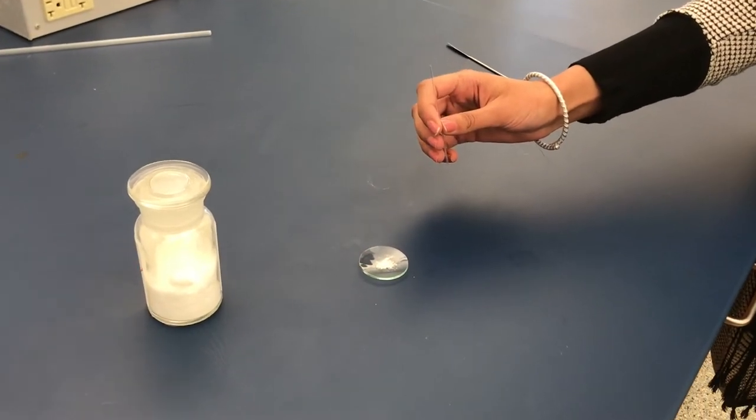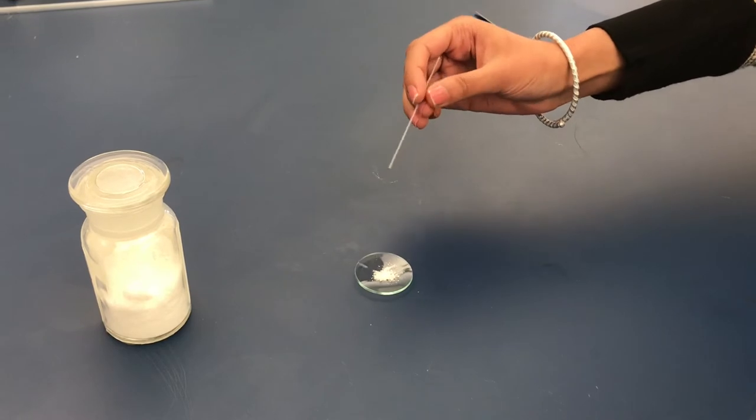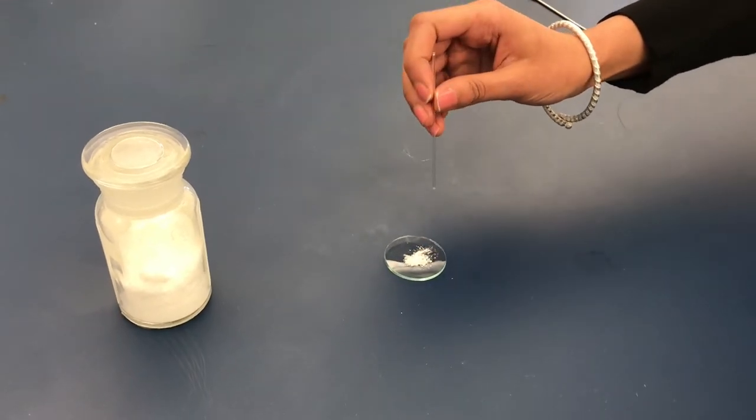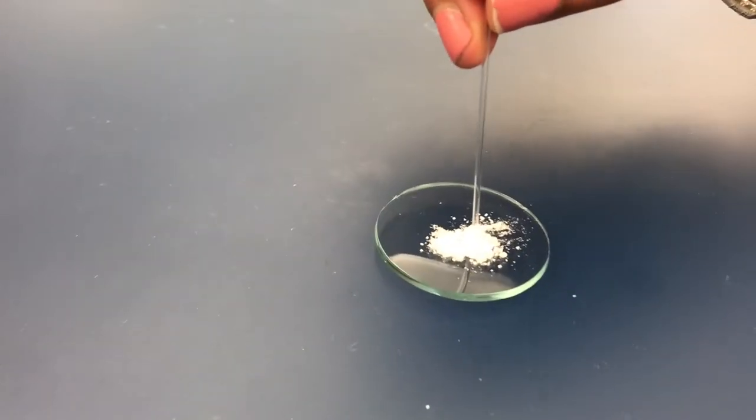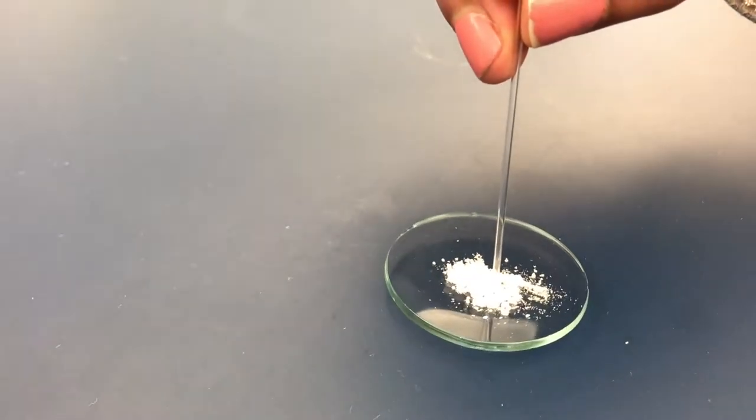In order to load the solid into the capillary tube, turn the capillary tube so that the open end faces the solid and gently press the capillary tube into the solid. Only a small amount of solid is required.